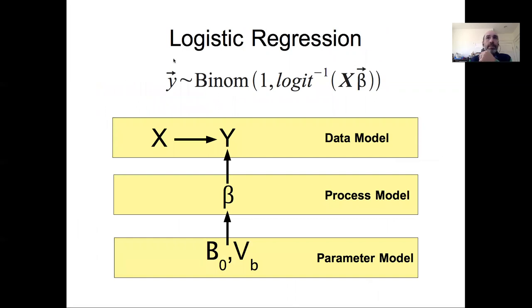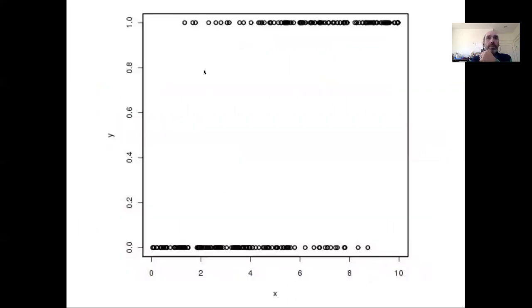Graphically, we're depicting a model where we have our response variable y being related to our covariate x and our parameters beta, and then our parameter model being the priors on that beta. As a reminder, we talked about how when you visualize logistic data, it's often hard to see the patterns in the data itself, so one thing that's commonly done is to smooth or bin that data to get an idea of the underlying pattern.